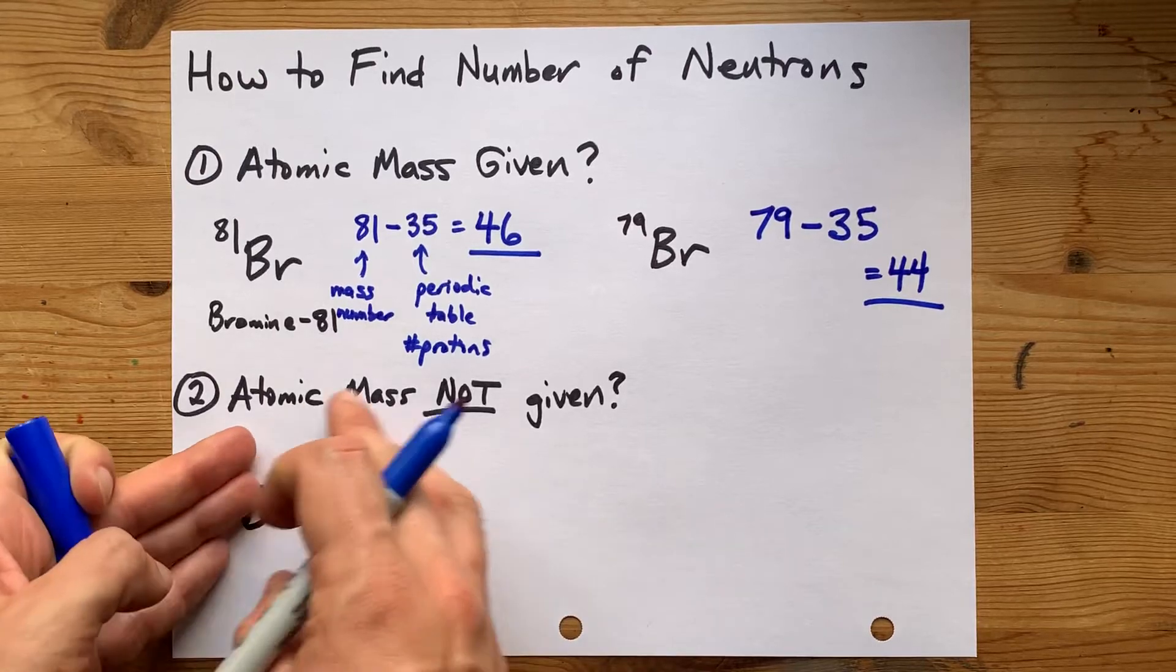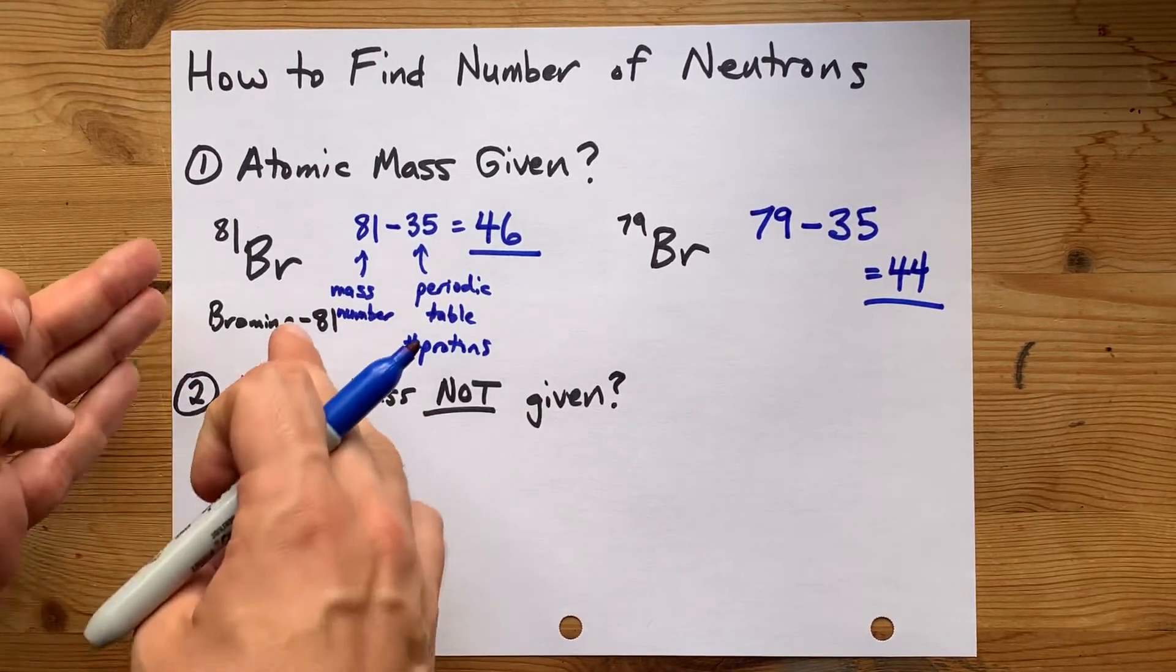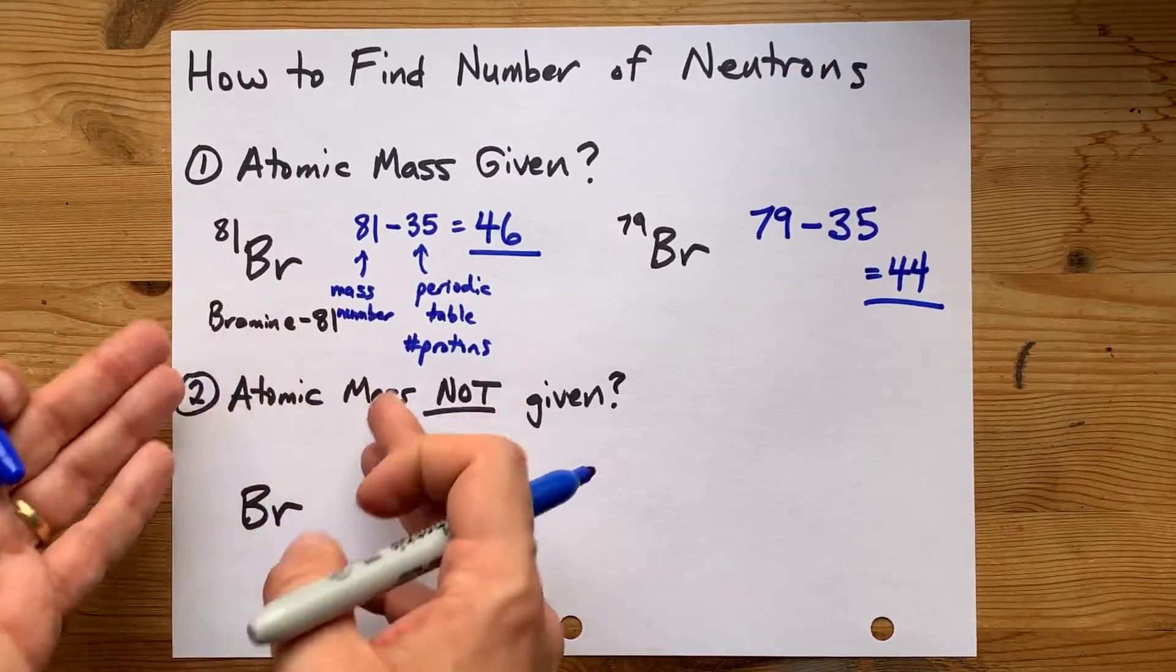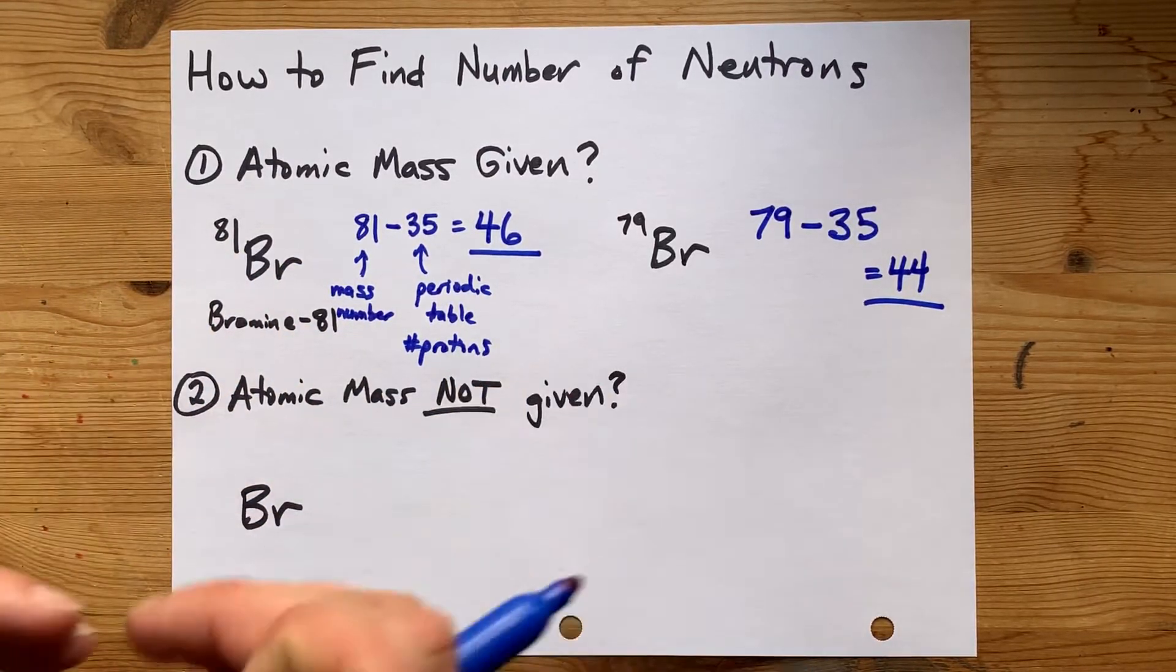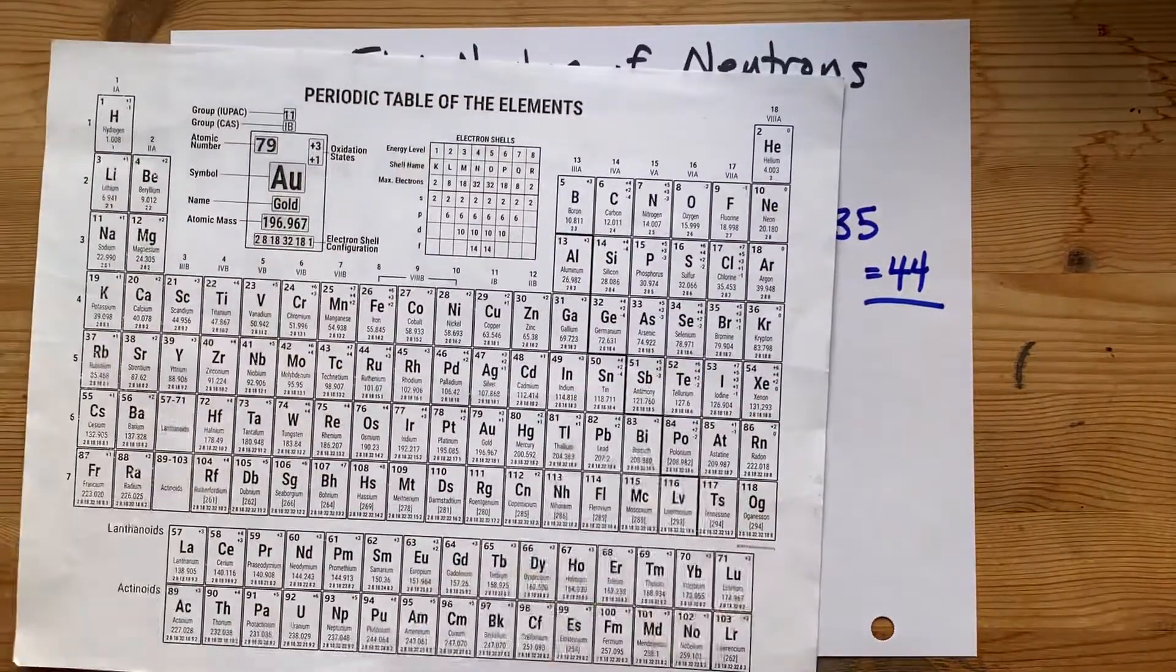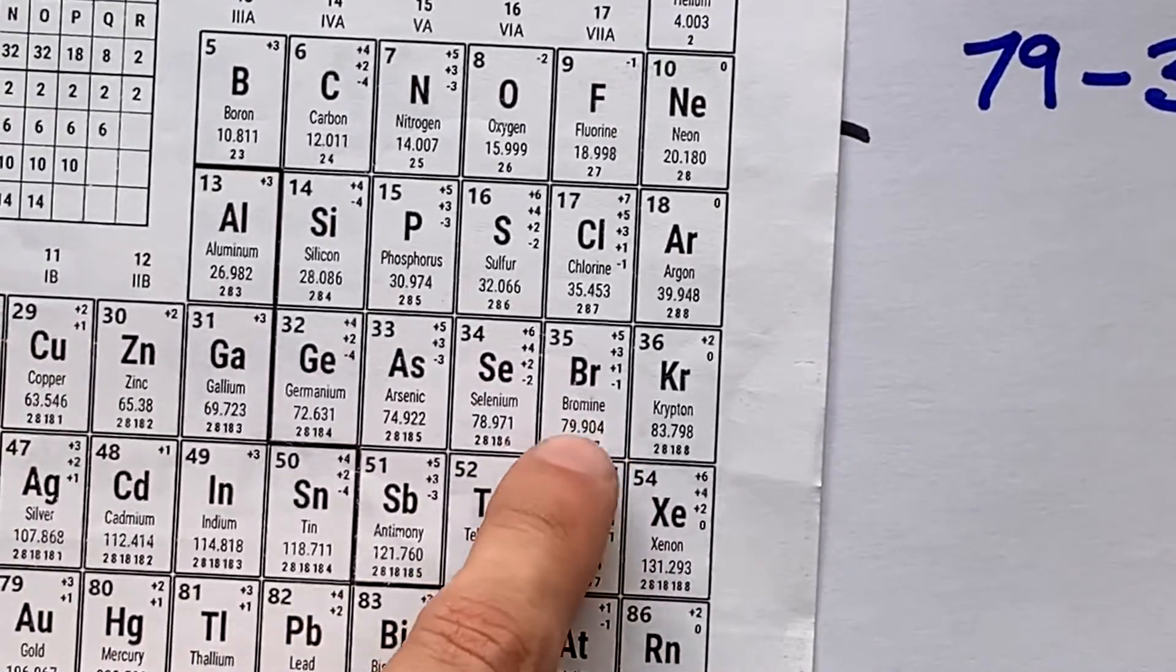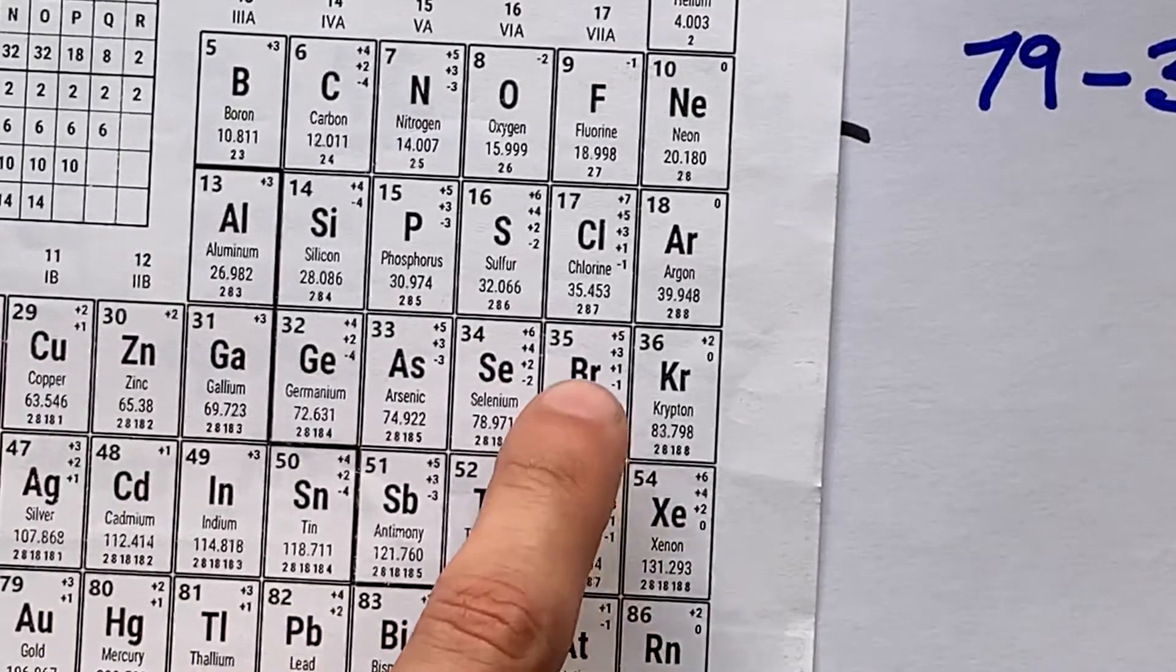Now, if your teacher does not give you the particle's mass, if they don't say this is 81 Br or bromine 81 or something along those lines, if they just say how many neutrons are in bromine, what your teacher is asking you to do is to assume that this mass is the actual mass of the particle.